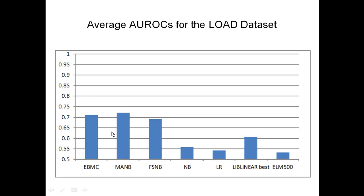When we analyzed the real LOAD dataset, the three Bayesian network-based methods other than naive Bayes performed very well — MAN-B did a little better than EBMC, but they both achieved AROCs of over 0.7, which is impressive because we're predicting risk for Alzheimer's disease based solely on somebody's genome. LASSO and LIBSVM are not included here because they weren't able to handle this many SNPs — we just couldn't get the programs to work. LIBSVM was the method we would hope had the best results, but we weren't able to get any results for it.